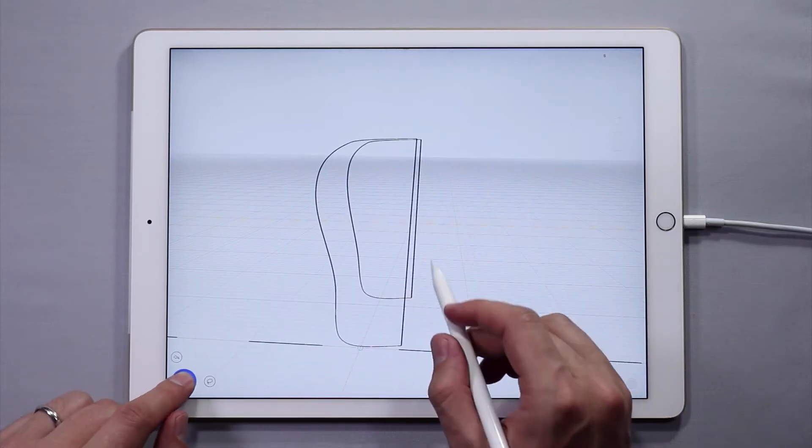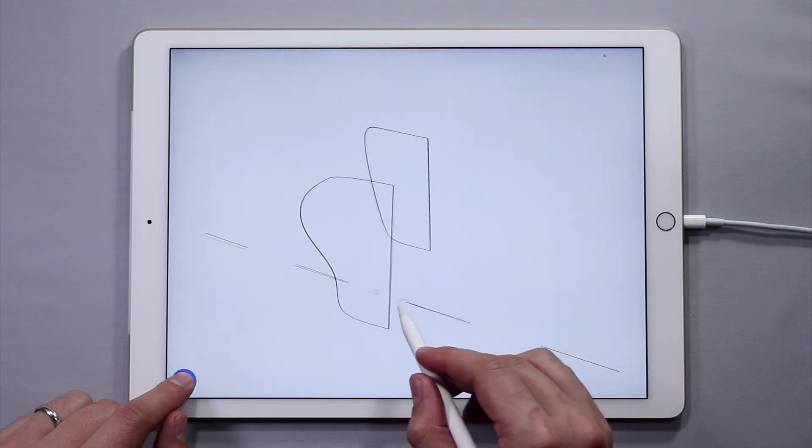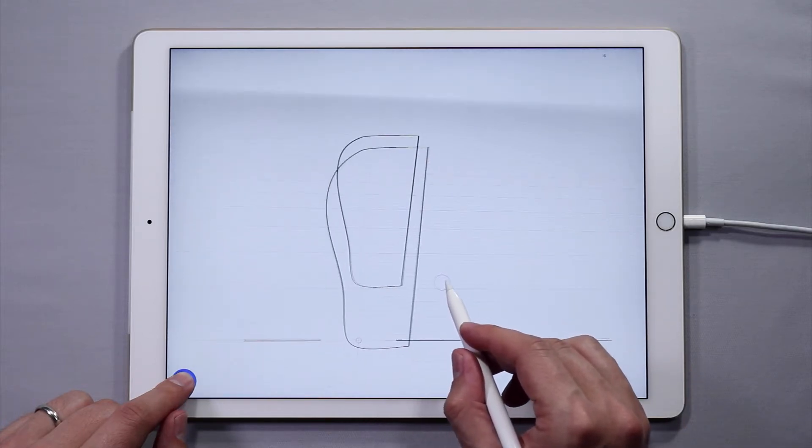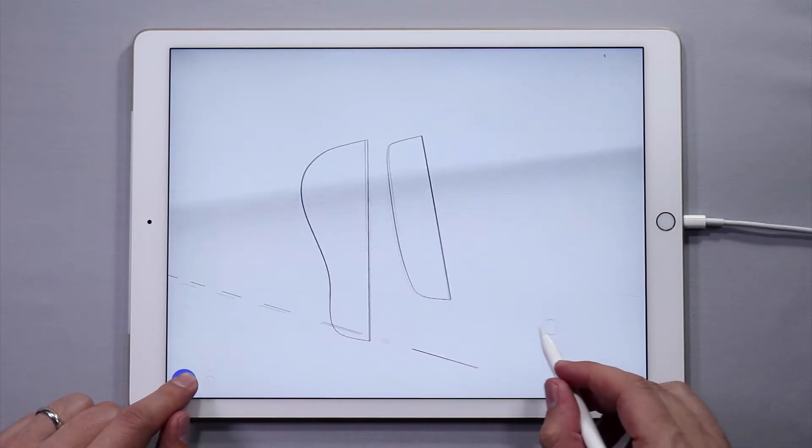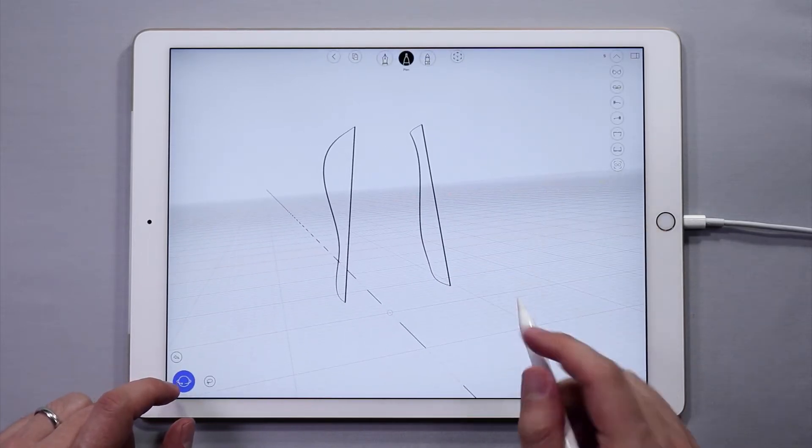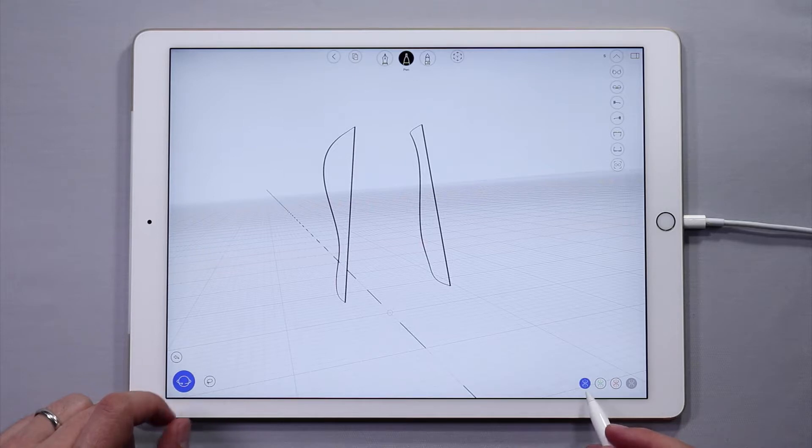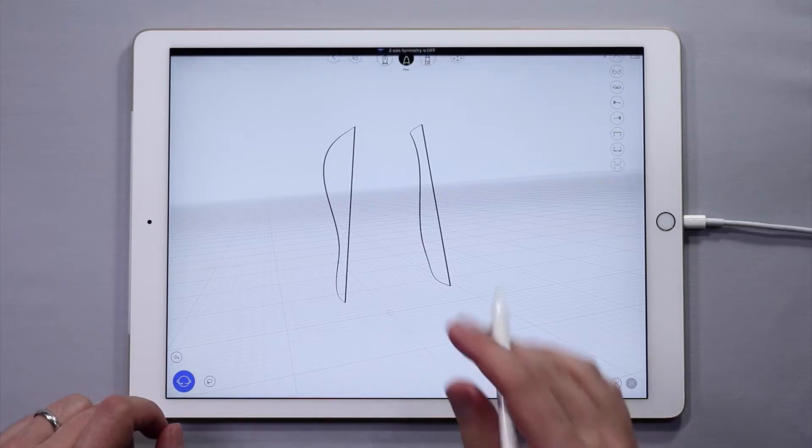Now to connect both sides, we need to disable symmetry. So we're going to come down to the bottom right by default, and we're going to tap on the Z-axis symmetry to disable it. Then tap on each corner to create a sketch plane again.